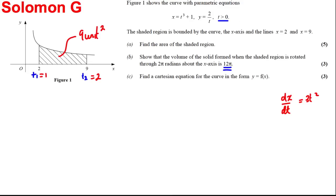Part C, it asks us to find the Cartesian equation of the curve in the form y is a function of x. Well, we know that x is equal to t cubed plus 1. We also know that y is equal to 2 over t.